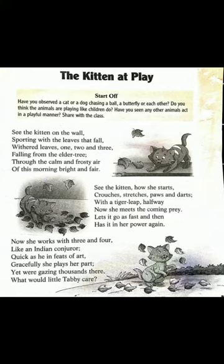See the kitten how she starts, crouches, stretches, paws and darts — these lines mean you have to look at the kitten and how she's playing. Sometimes she's crouching — crouching means the way animals move, bending their legs. She stretches — like when we jump, we stretch ourselves. Paws means when the kitten tries to catch the leaves with her paws, which are her legs.